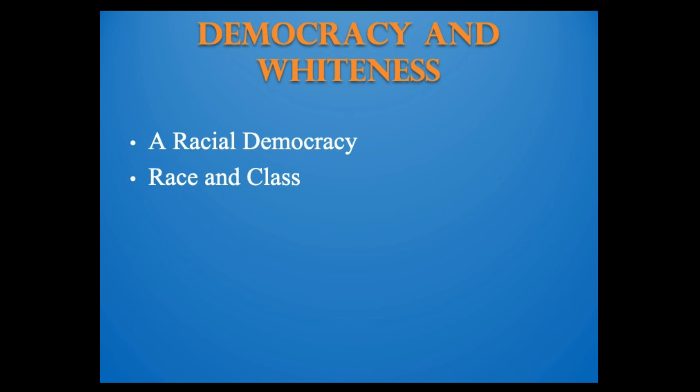After 1800, every state admitted to the union except for Maine limited voting rights to white males only. By 1860, blacks could vote on the same basis as whites in only five New England states, which had only four percent of the nation's free black population. Whites of the revolutionary era had considered blacks as potential members of the body politic, but in the 19th century, membership in the political nation was increasingly demarcated by race. No blacks had full equality before the law, and they were barred from schools, militias, and other public institutions. In effect, race replaced class as the boundary between American men with political freedom and those without, a process that incorporated many white immigrants into American democracy.